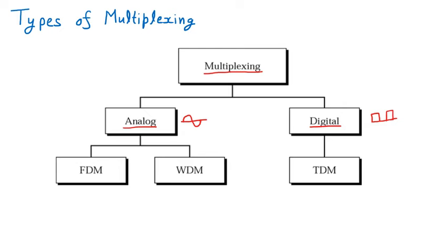Under the analog technique, the first type of multiplexing is FDM — Frequency Division Multiplexing. Suppose we have three devices working on different frequencies. These three frequencies are merged and sent as one — that is called FDM. The second type is WDM.